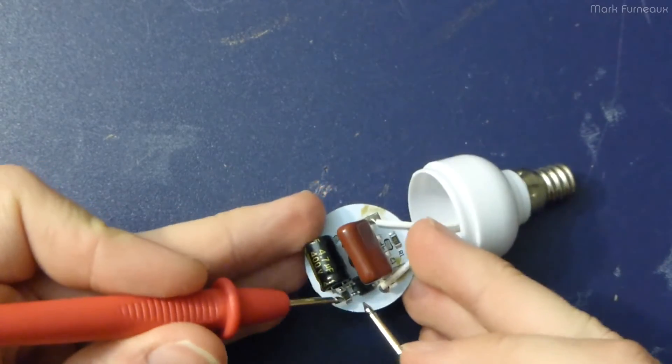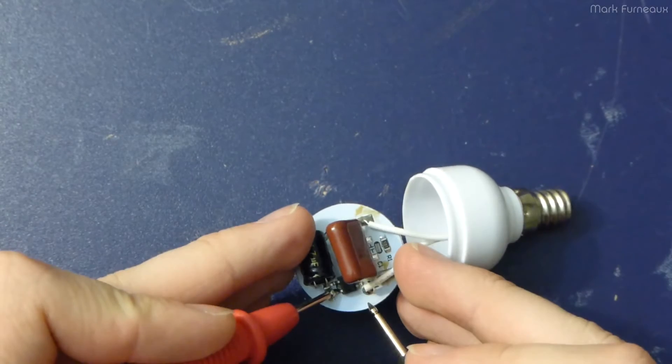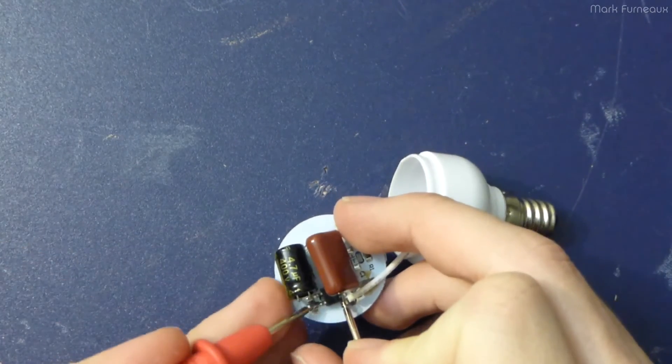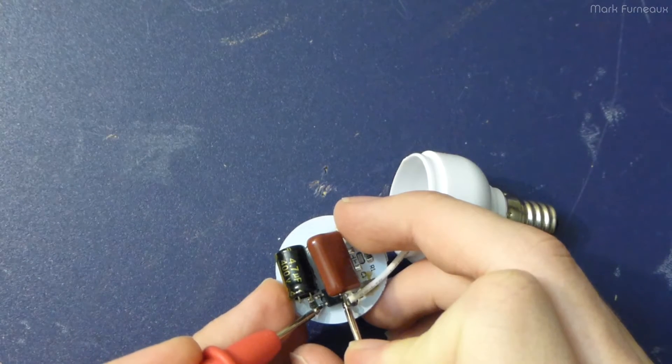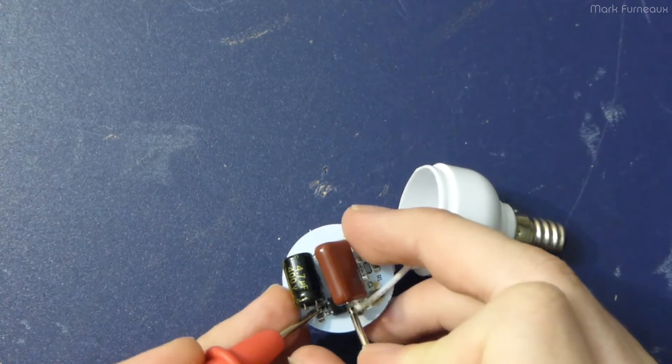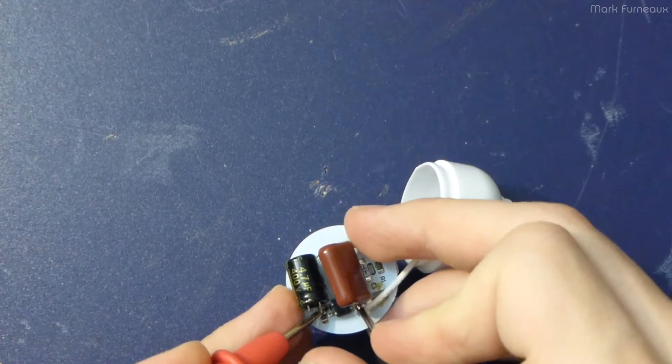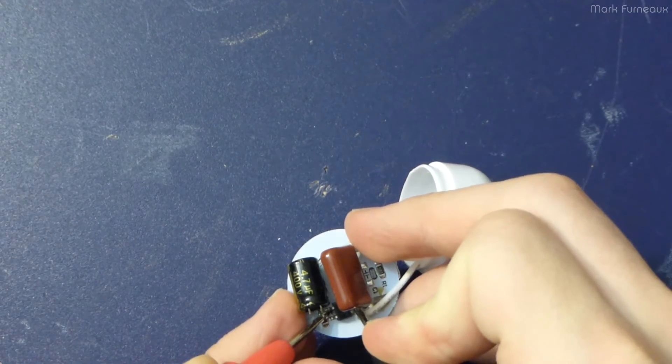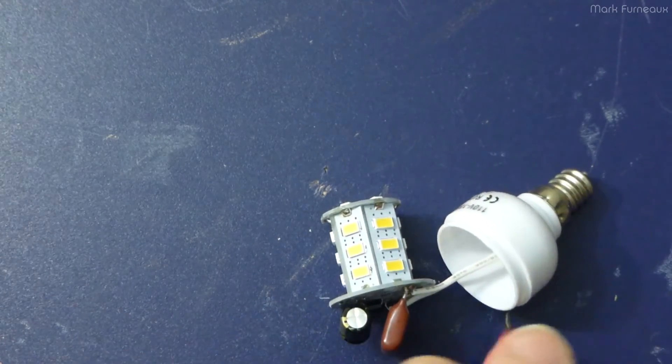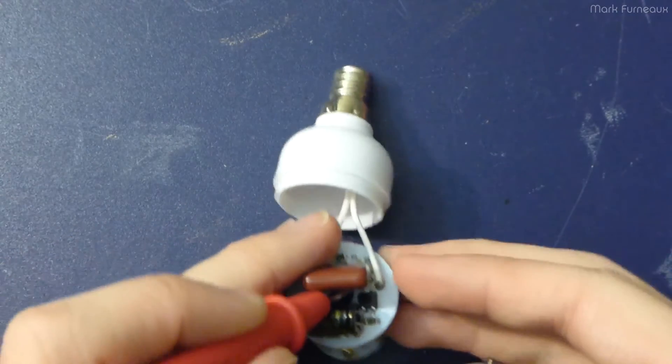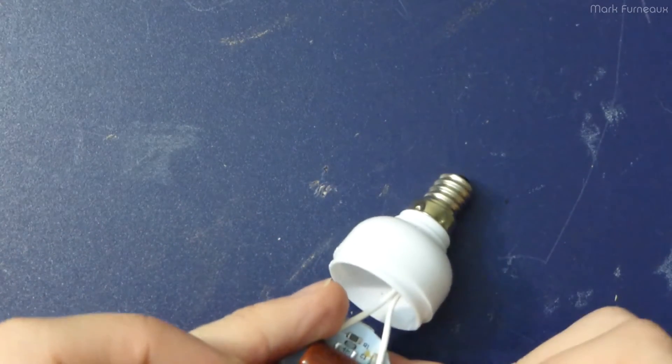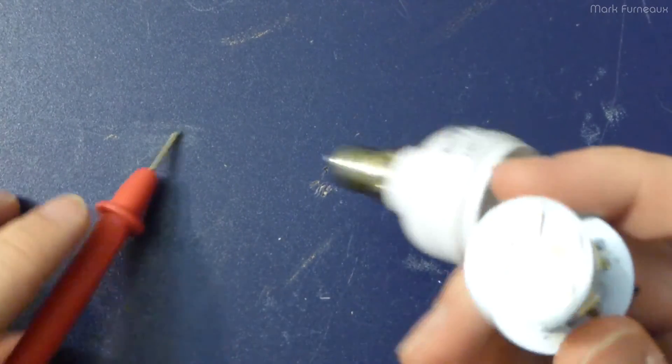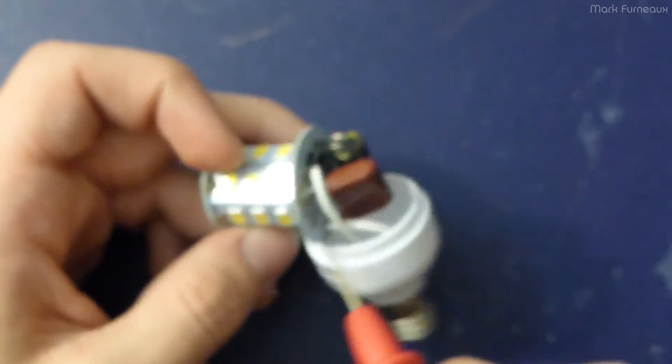So I might as well test the bridge rectifier because that's literally the only other thing that I can test. And in the diodes I might test the diodes with a diode checker to make sure that they're all good. First, and then by process of elimination that will be what's wrong. I'm sure the bridge rectifier's fine. Yeah, the bridge rectifier looks fine.